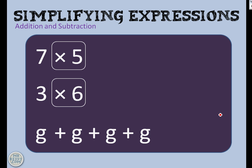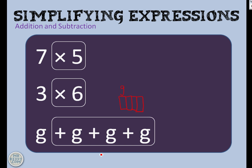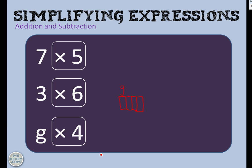It's the same with algebra. So we've got g plus g plus g plus g. A quick bar model would look like this. There's g and then I'm going to add it onto itself so that I've done g plus g plus g plus g. Well, all of that can be simplified to g times 4, just like we've done in some of the examples above.